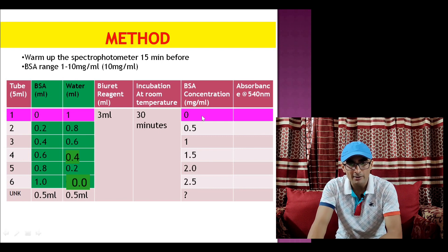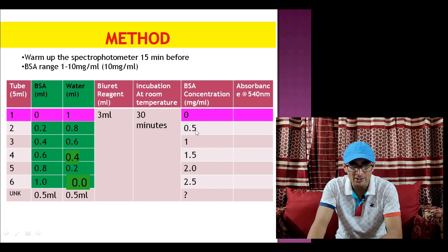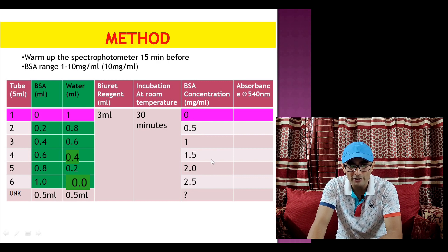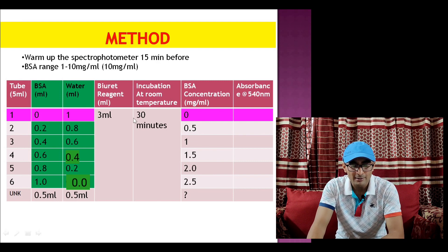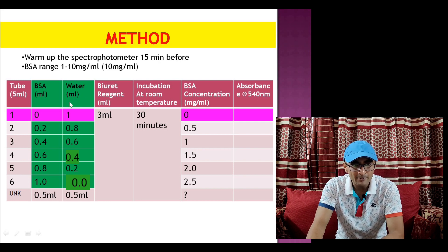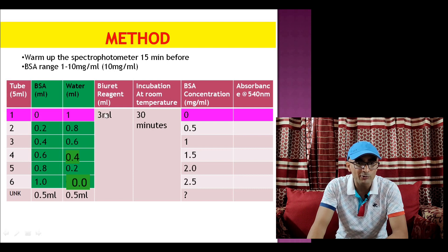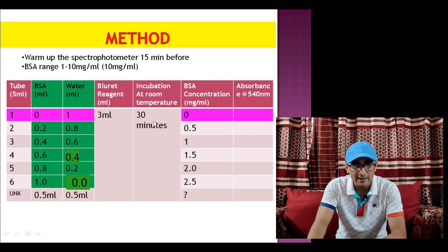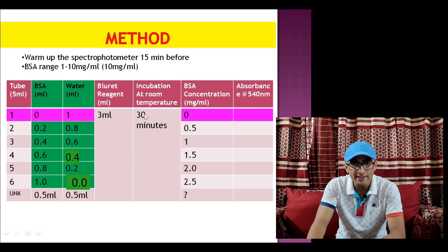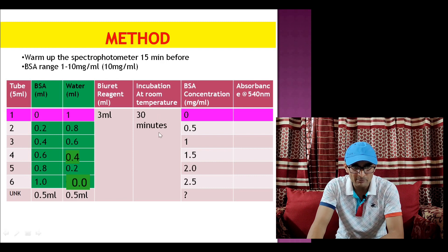That's how we have different concentrations of BSA ranging from 0.5 to 2.5 mg per ml. After adding BSA and water to have 1 ml volume, 3 ml of the biuret reagent is added and then it is incubated at room temperature for 30 minutes.